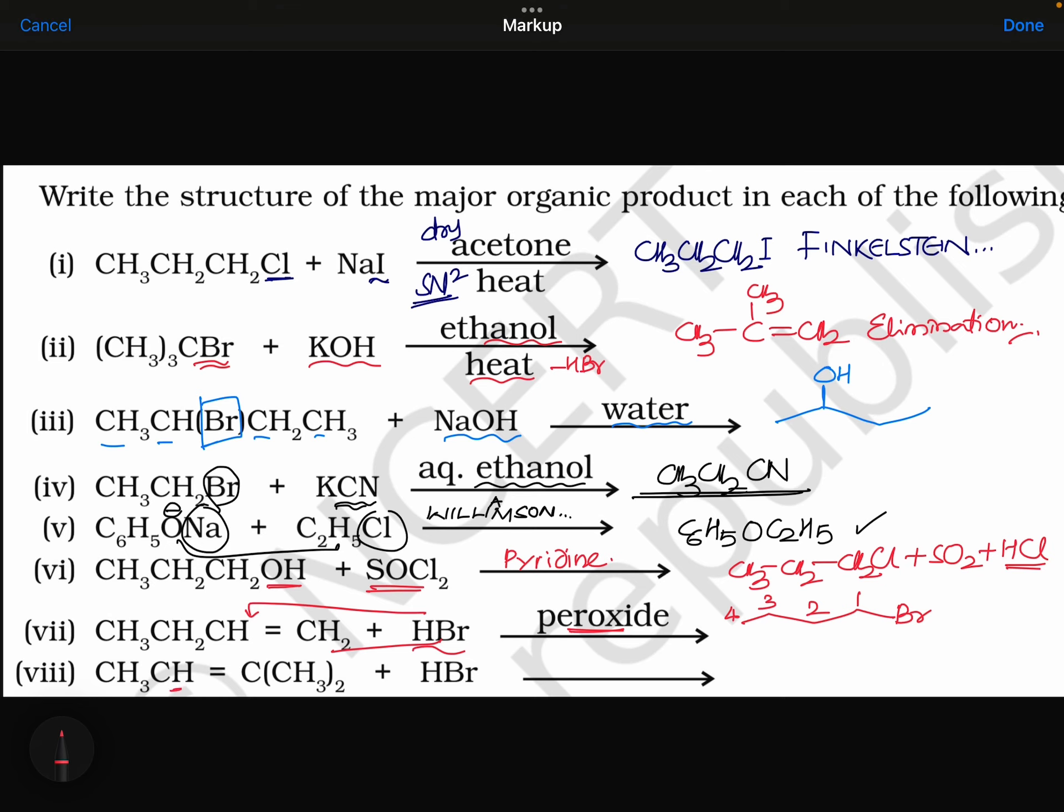In this case, normal HBr without peroxide means Markovnikov addition. Rich becomes richer. Simply go for Markovnikov's addition. So, when hydrogens are there, this place will be getting hydrogen CH3, CH2, CH2. Then, thank you.